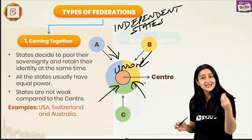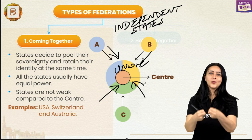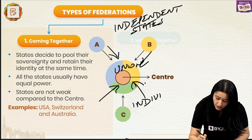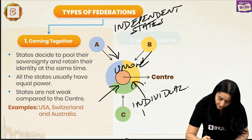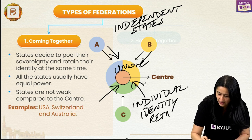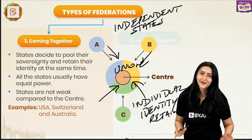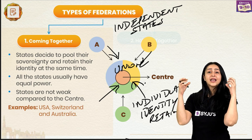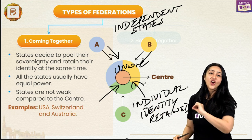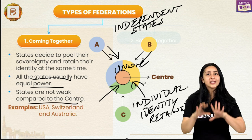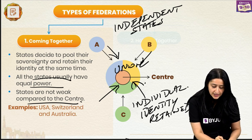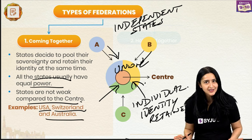In a coming together federation, the states have decided to pool in their sovereignty and resources while retaining their own individual identities. Along with this, these independent states usually have equal powers and are not weak compared to the center — they are all equally powerful. Some examples of this type of federation are Switzerland, USA, and Australia.